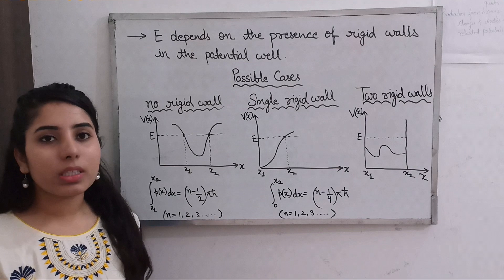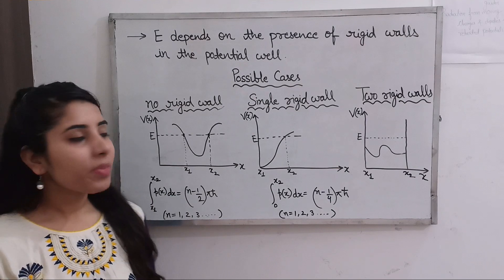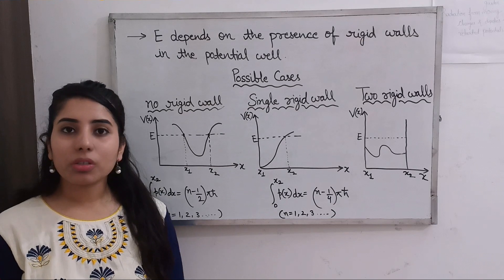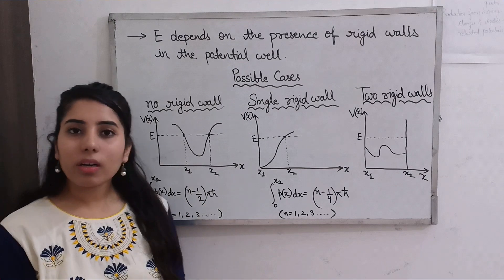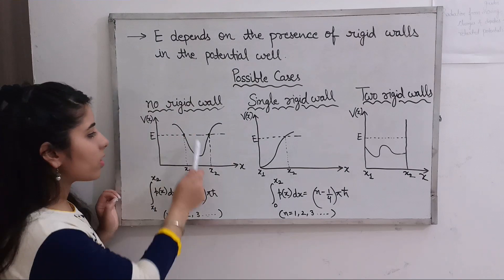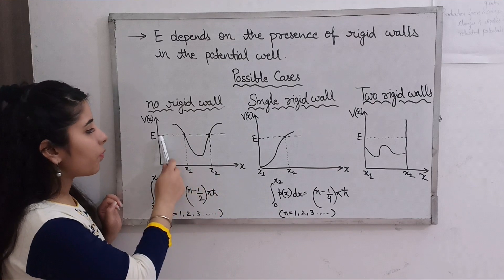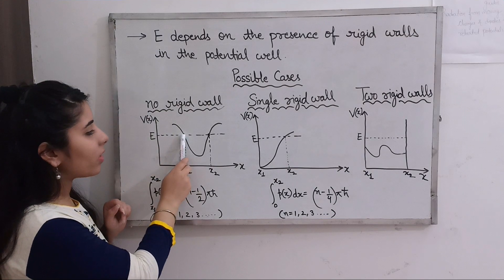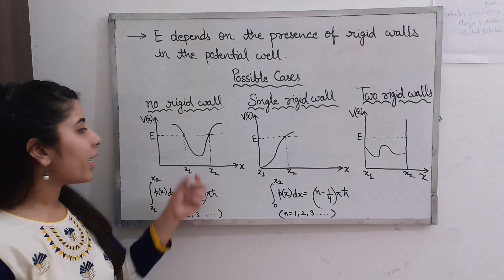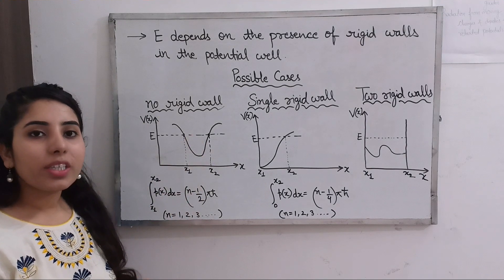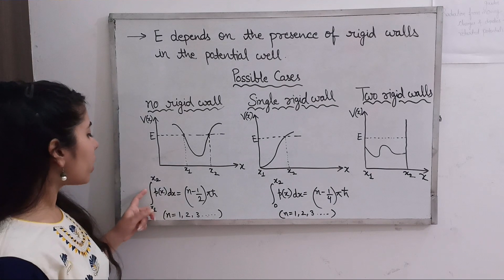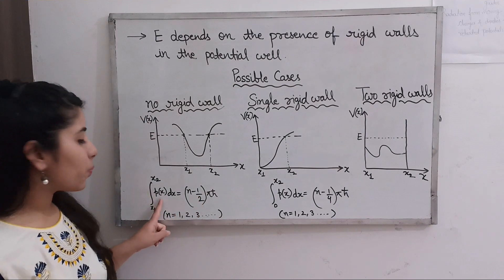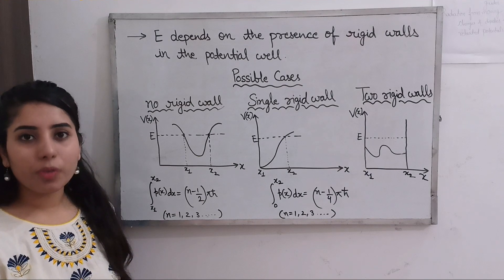When there is no rigid wall, x₁ and x₂ are the classical turning points where E = V. In this case we integrate from x₁ to x₂: ∫p(x)dx = (n − 1/4)πħ... actually, for the no-rigid-wall case, we integrate p(x)dx from x₁ to x₂, where p(x) = √(2m(E − V)). This gives the quantization condition to find bound state energies.